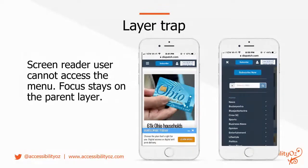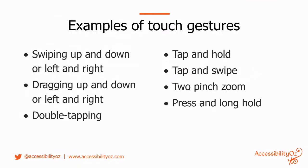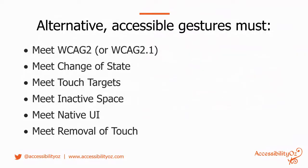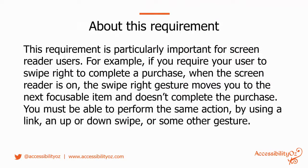Let's look at an example from the document — touch gestures. Any touch gesture must have an alternative accessible actionable item, very similar to WCAG 2.1 success criterion 2.5.1 pointer gestures. Examples of touch gestures include swiping up/down or left/right, dragging, double tapping, tapping and holding, tapping and swiping, pinch zoom, and press and long hold. The alternative accessible gesture must meet WCAG 2 or 2.1, make a change of state, meet touch target requirements, meet inactive space requirements, meet native UI requirements, and support removal of touch. Alternative accessible gestures that are inherently accessible include things like a link, a button, a drop-down, or a separate page with functionality.